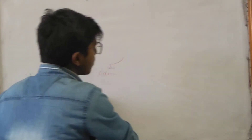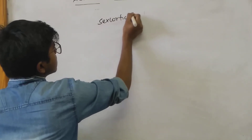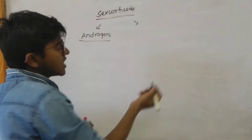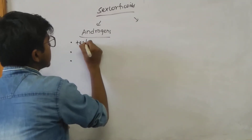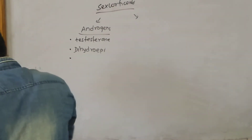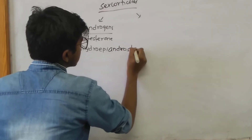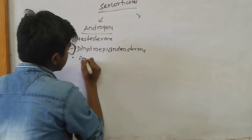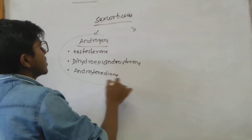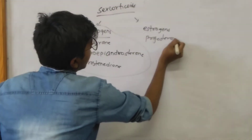Lastly, the sex corticoids are secreted by the zona reticularis. There are two types: androgens and female hormones — estrogens and progesterone. Among androgens, they include testosterone, dehydroepiandrosterone (DHEA), androsterone, and androstenedione. The sex corticoids produced by the adrenal gland are mainly androgens; estrogens and progesterone are secreted in very small amounts.